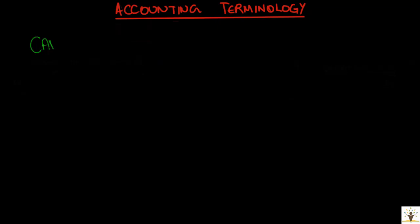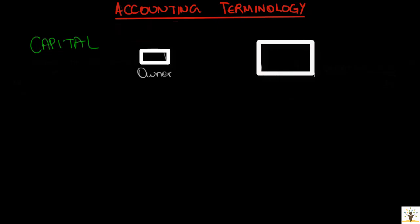The first term is capital. Capital is the amount invested by the owner into the business. So capital is the money or any other personal asset that the owner puts into the business.